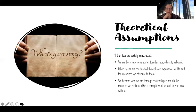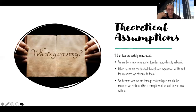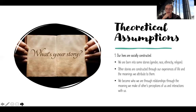We become who we are through relationships. Bowen had the idea that we become who we are by becoming more differentiated. Minuchin said we are who we are because of relationships. With social constructionism, there is that sense that our relationships and our society shape us to some degree, though we also have our own personal experiences. We become who we are through relationships — through the meaning we make of others' perceptions of us and interactions with us.